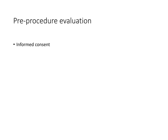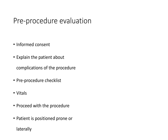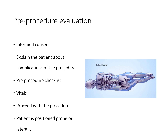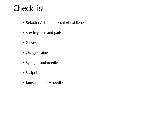Before performing the procedure, informed written consent must be taken from the patient and the attendees, who must be explained about the technique and its complications. A pre-procedure checklist must be done beforehand so that no item is missed. Vitals both before and after the procedure must be noted. The patient is generally positioned in lateral decubitus or prone position. The pre-procedure checklist includes Betadine, Sterilium or Chlorhexidine, sterile gauze pads, sterile gloves, 2% lignocaine with buffer, syringes and needles, number 11 scalpel, Jamshidi biopsy needle, clean glass slides, EDTA and heparin vacutainers, and formalin.